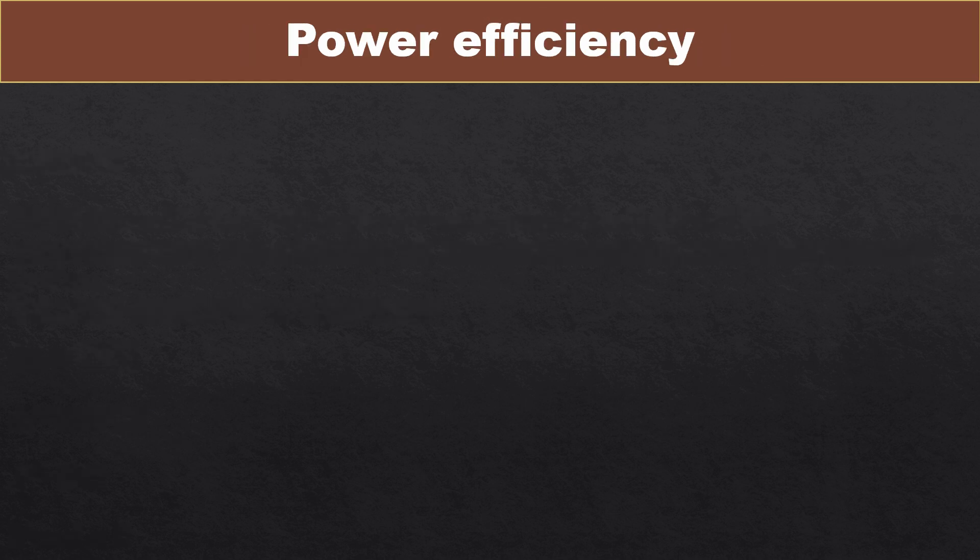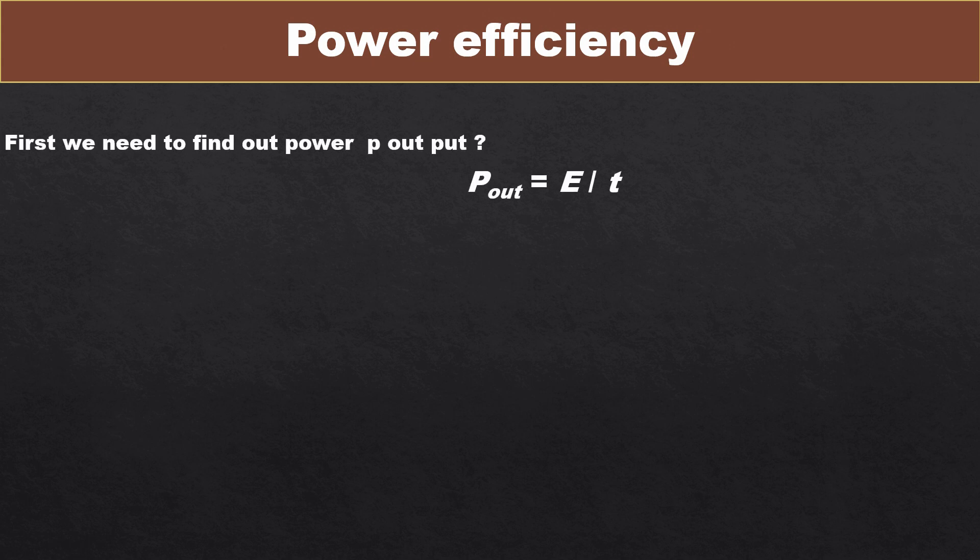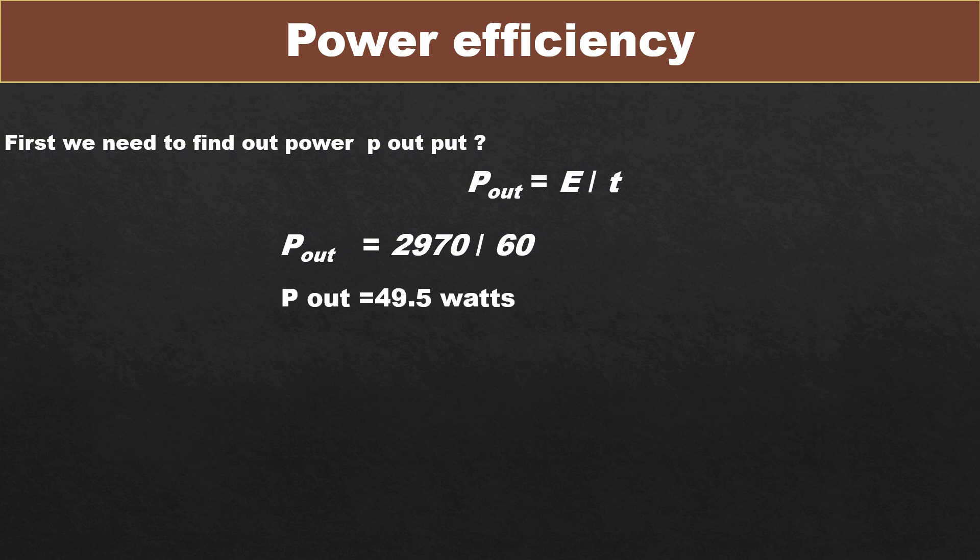First we find output power. The formula for output power is output power equals energy divided by time. So put the values in this formula: 2970 joules divided by 60 seconds. The answer is 49.5 watts.